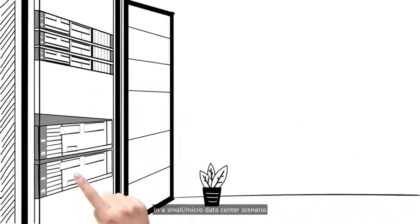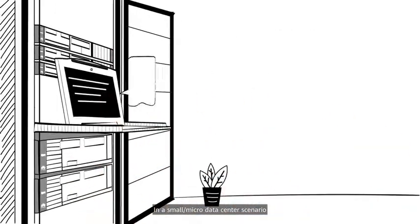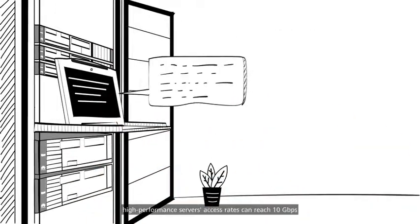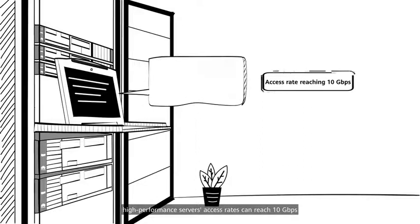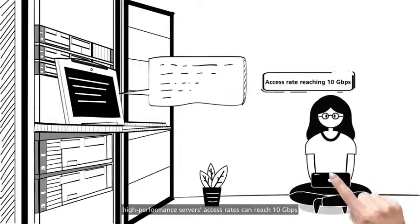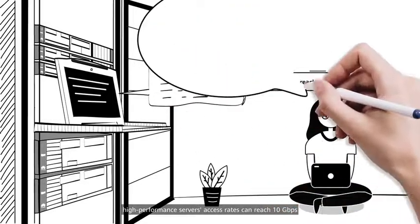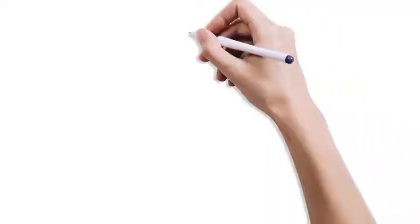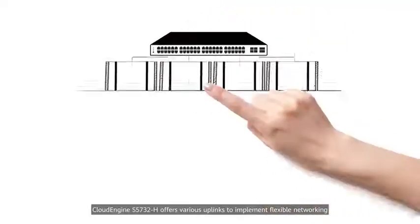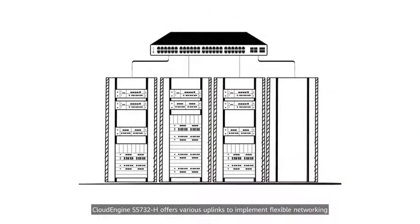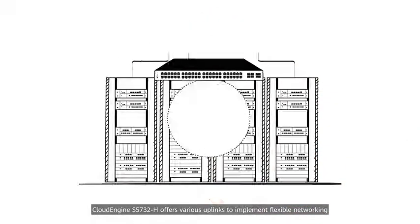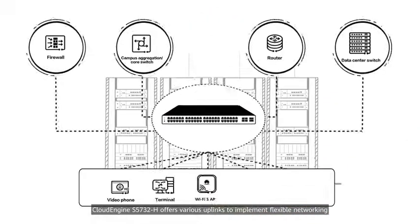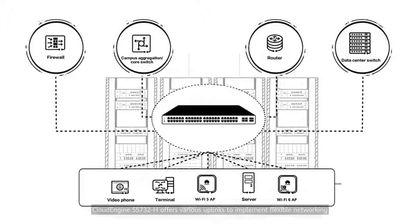In a small micro data center scenario, high-performance servers' access rates can reach 10Gbps per second, and uplink networking is complex. Cloud Engine S5732H offers various uplinks to implement flexible networking.